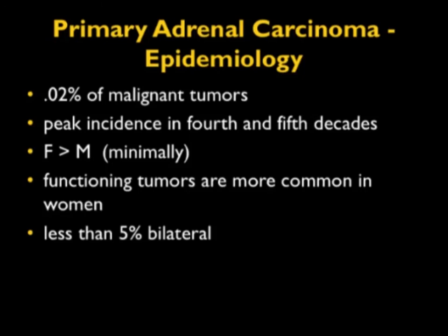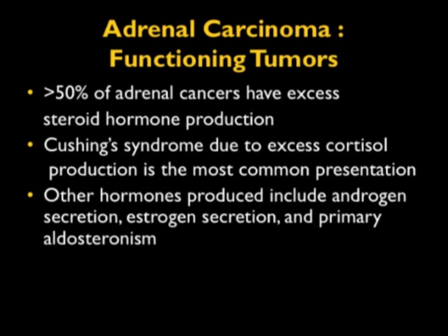When speaking about adrenal lesions, primary adrenal carcinoma is a popular diagnosis you need to know about but it's fairly infrequent — it makes up a small percent of malignant tumors. Peak incidence is in the fourth and fifth decades of life, a bit more common in females than males, but functioning tumors are much more common, particularly Cushing's in women, and it's rarely bilateral. Over 50% of tumors will have excess steroid hormone production. The most common presentation is Cushing's, though androgen secretion, estrogen secretion, and primary aldosteronism are all things to consider.